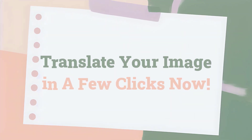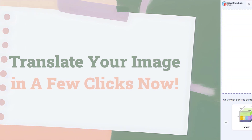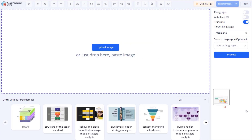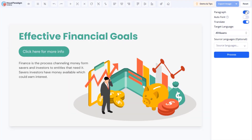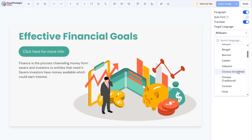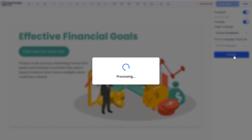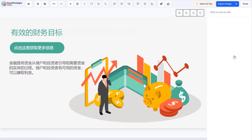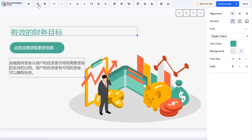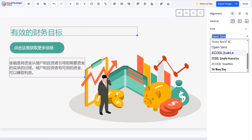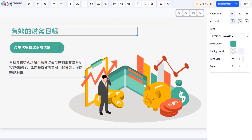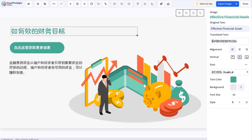Translating an image and customizing the result takes just a few clicks. Simply upload your image, set your translation preferences, select the target language, and press Process to start. Once the translation is complete, all text elements are separated into editable text blocks, allowing you to refine the translated text while maintaining the original design.